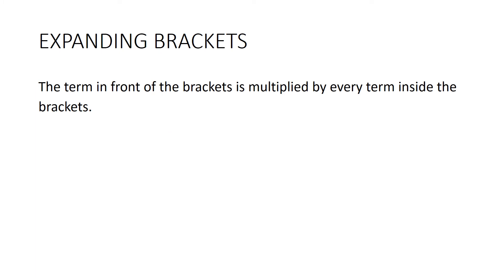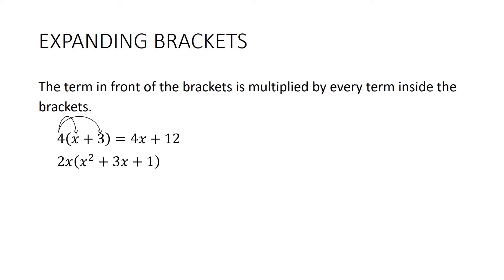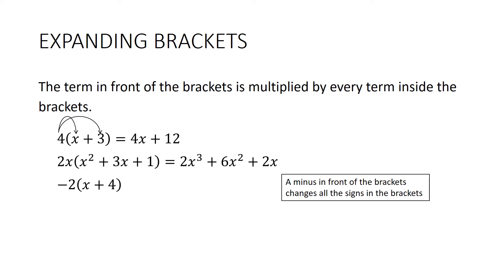When we're expanding brackets, the term in front of the brackets is multiplied by every term inside. So 4(x + 3) means multiply 4 by x and then 4 by 3, giving 4x + 12. If there are three things in the brackets, like 2x(x² + 3x + 1): 2x times x² is 2x³, plus 2x times 3x is 6x², plus 2x times 1 is 2x. Be careful of negatives in front of brackets — they change the sign. For example, −2(x + 4): negative 2 times x is −2x, and negative 2 times positive 4 is −8.